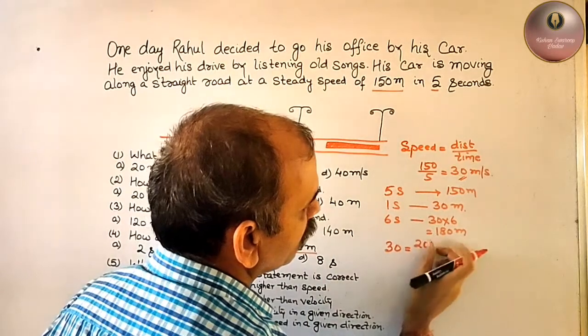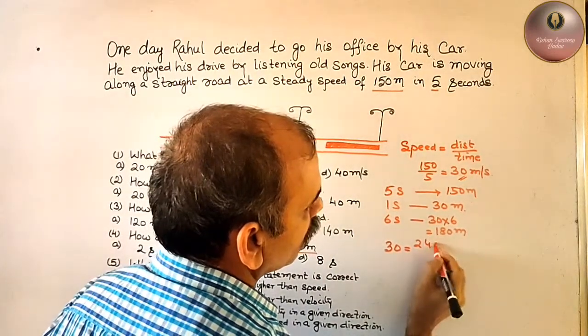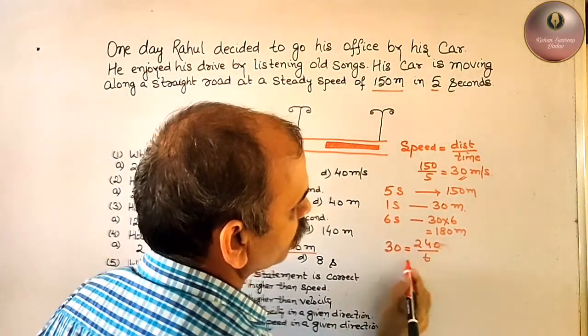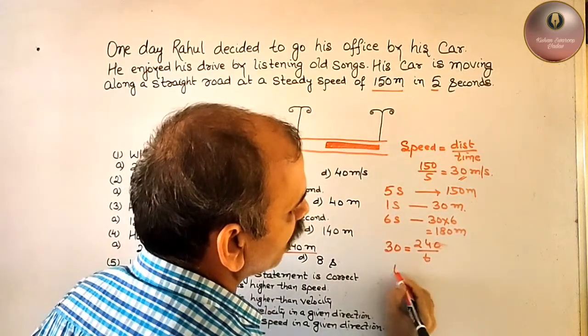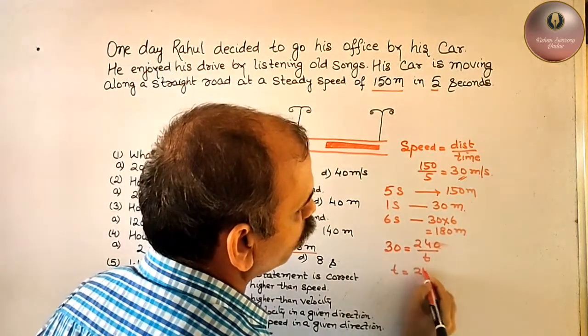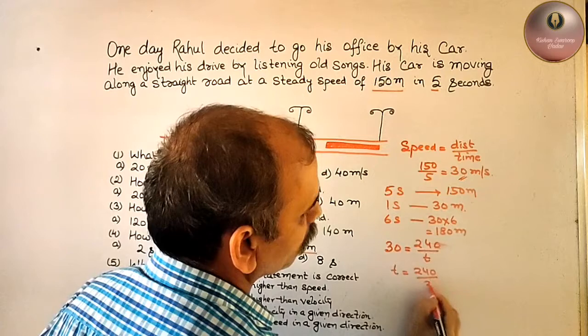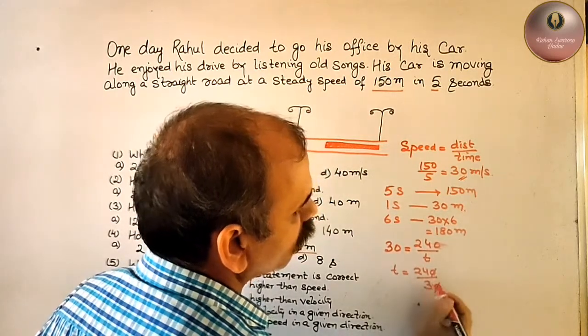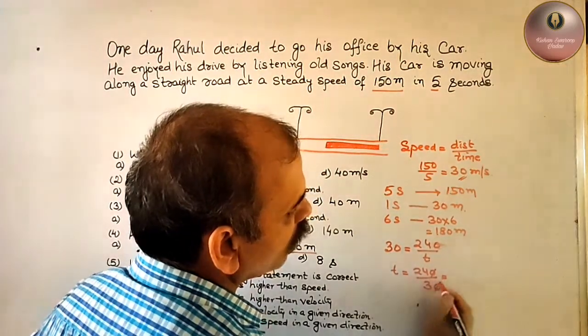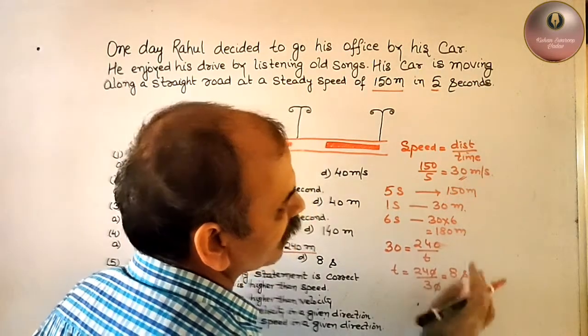240 by time T. Cross multiply you will get T is equal to 240 by 30. You will get 8 seconds.